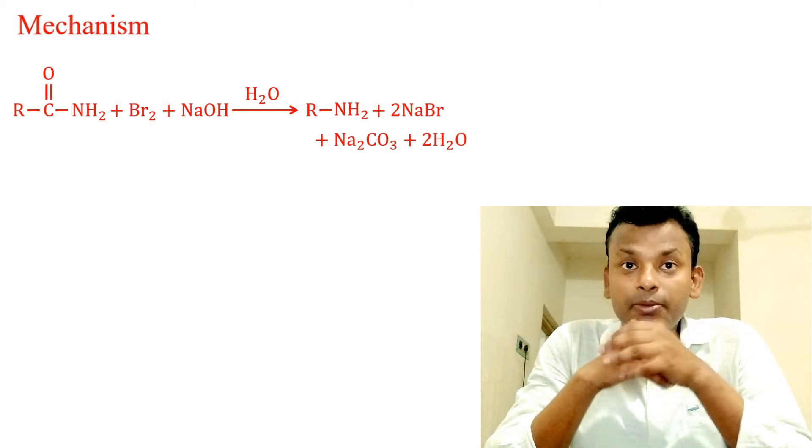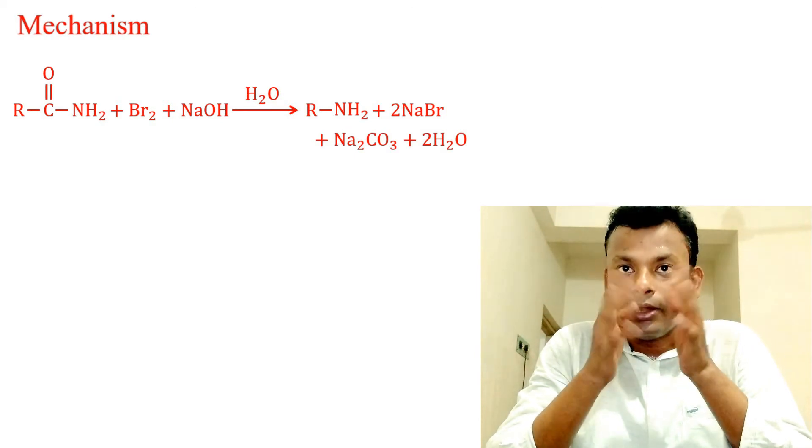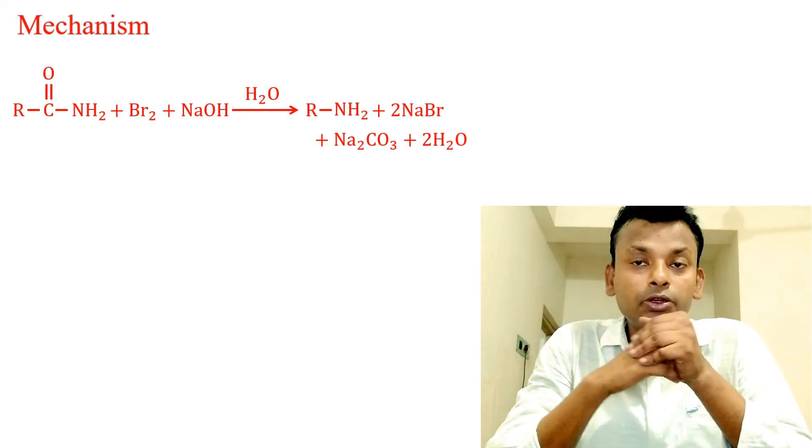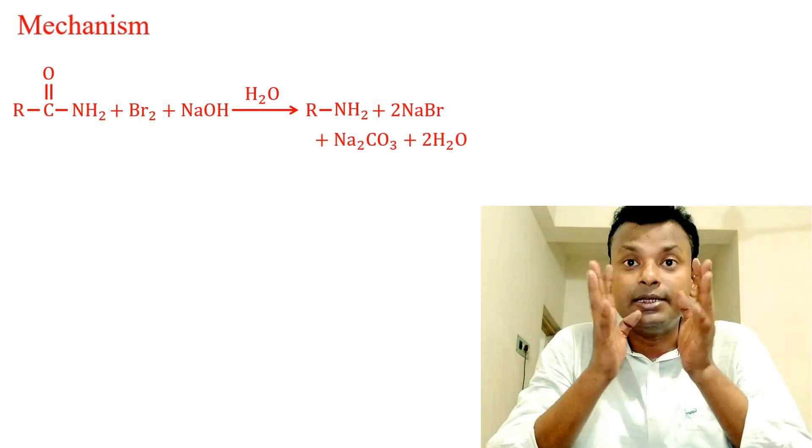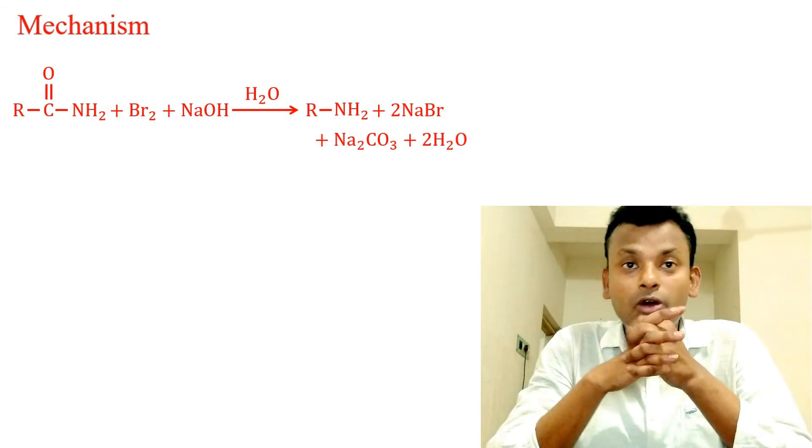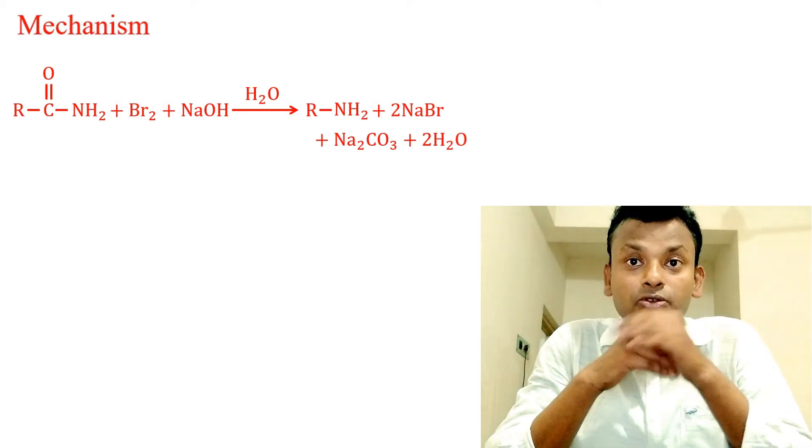The N-bromo amide then reacts with hydroxide ion to produce an anion, which simultaneously rearranges with the loss of a bromide ion to produce an isocyanate.